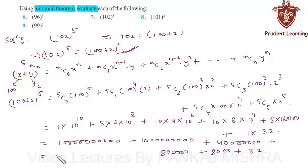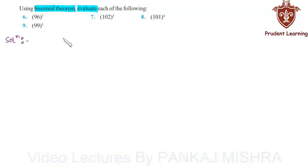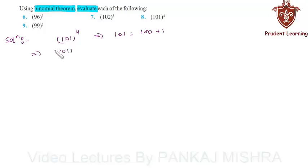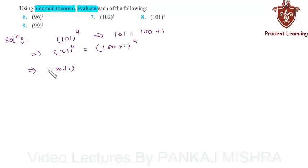When you add all these terms you will end up getting 11,10,04,08,08,032. So this is the value of 102 to the power of 5. Next we have to evaluate 101 to the power of 4. Here we can write 101 as 100 plus 1, which implies 101⁴ equals (100 plus 1) whole raised to the power of 4. By using the Binomial Theorem we can find the expansion for this quantity.